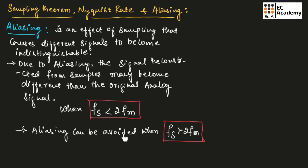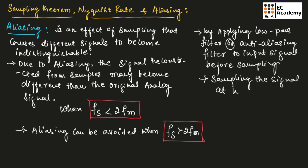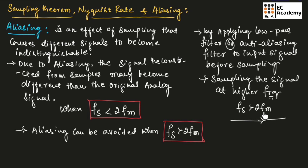We can avoid aliasing by taking Fs greater than 2Fm. Also, we can avoid aliasing by applying a low pass filter or anti-aliasing filter to the input signal before sampling, or by sampling the signal at a higher frequency, which means Fs should be greater than 2Fm.